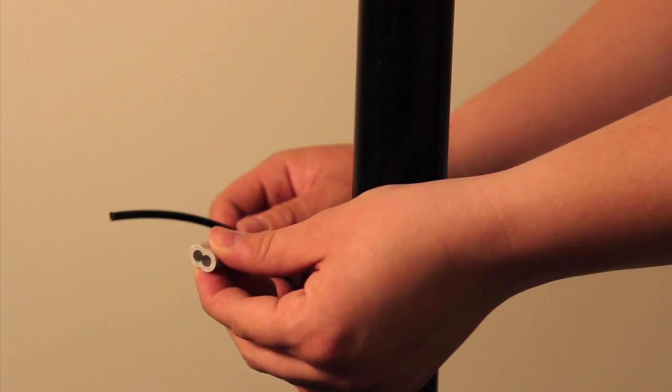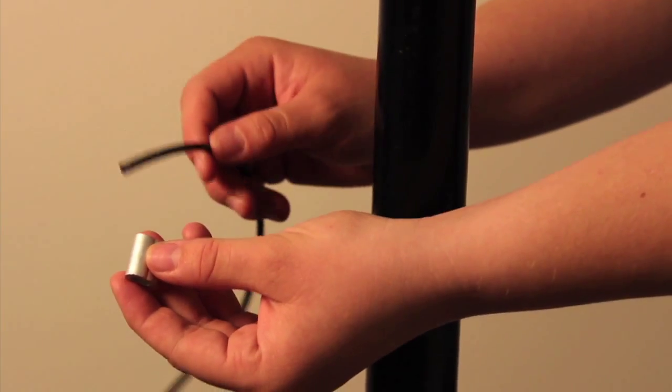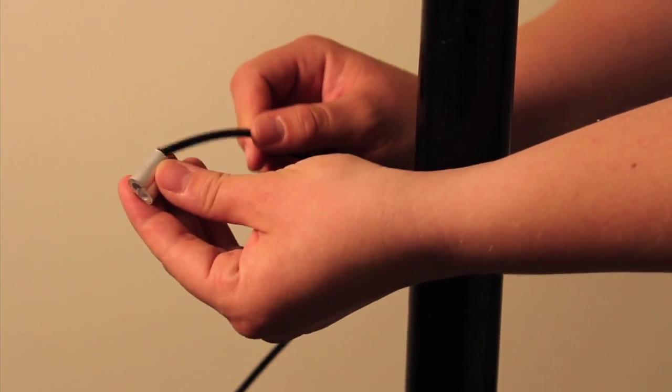When you're using the connection sleeves to tighten the monofilament around the post, first you want to slide the monofilament into one side of the connection sleeve.